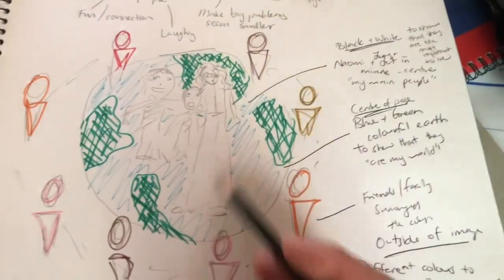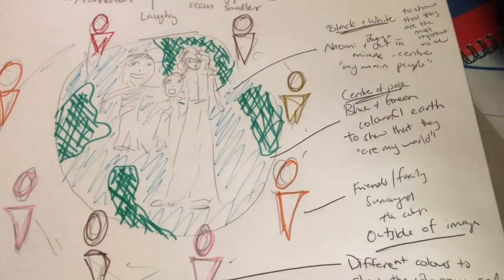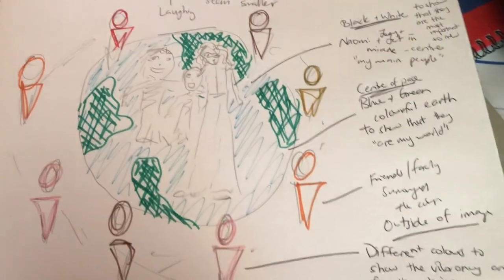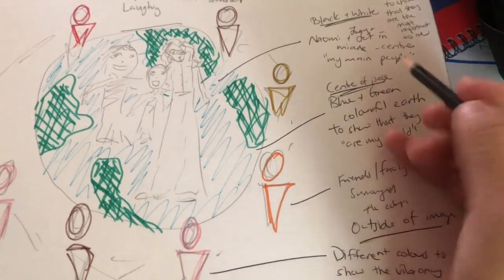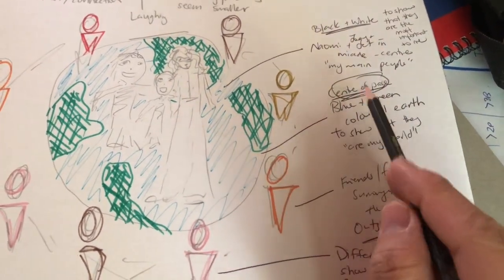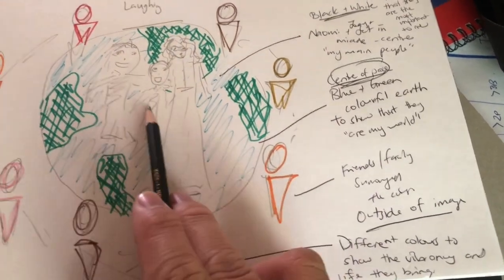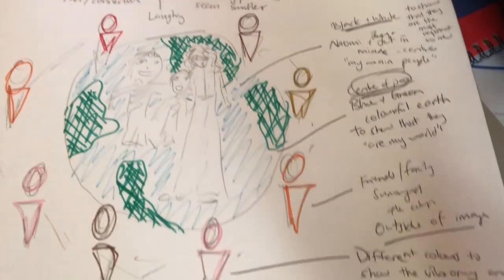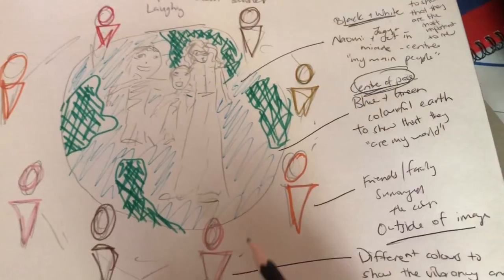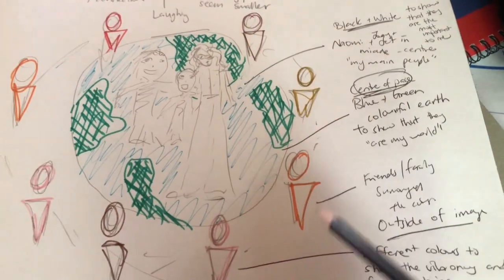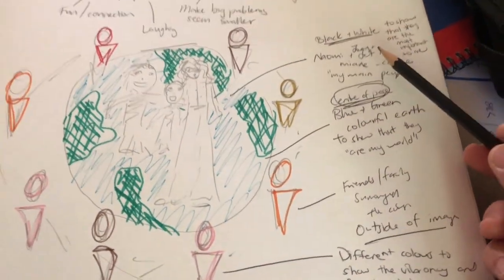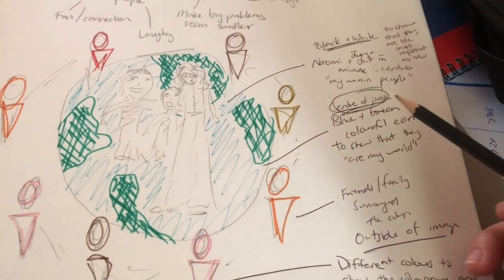They kind of operate around the most important people in my life. I've also talked about composition — where things are placed. I've put Naomi, Jethro, and Joey in the centre of the page, in the middle of the earth, on purpose to show that they are the most important. And then around the outside I've put my other friends and family, which are still important, but they kind of surround the most important. So in my draft plan I've talked about both colour and composition.